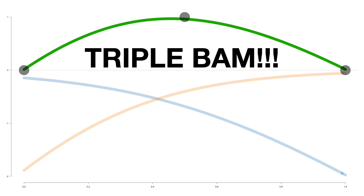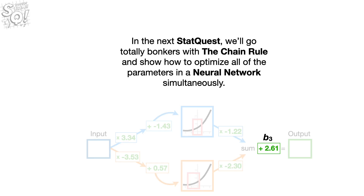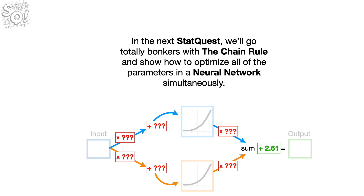Triple bam! In the next StatQuest, we'll go totally bonkers with the chain rule and show how to optimize all of the parameters in a neural network simultaneously.